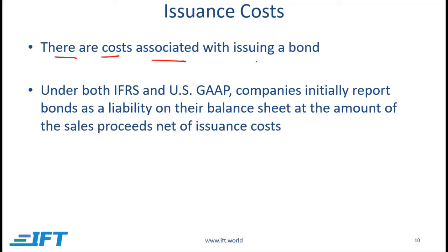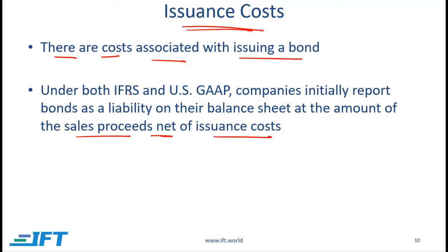There are costs associated with issuing a bond, and these are called issuance costs. In the past, the accounting treatment of issuance costs was different between IFRS and US GAAP, but now that has changed. Under both IFRS and US GAAP, companies initially report bonds as a liability on their balance sheet at the amount of the sales proceeds net of issuance costs. Both standards have now converged with respect to the treatment of issuance costs.